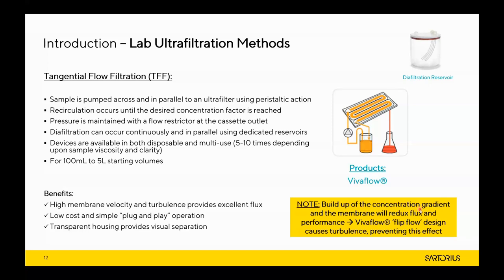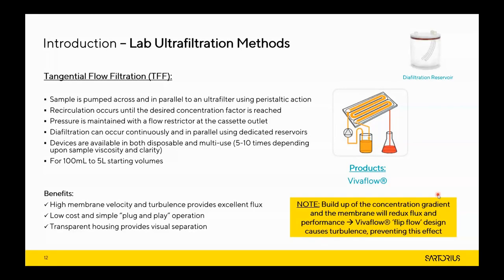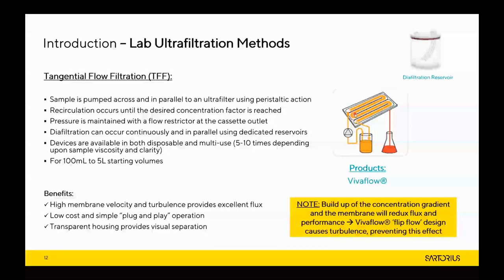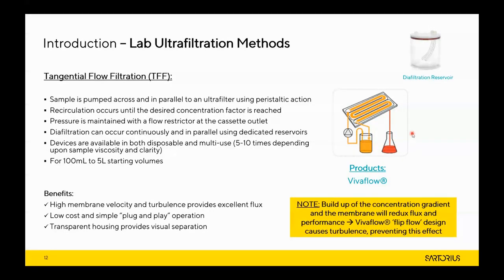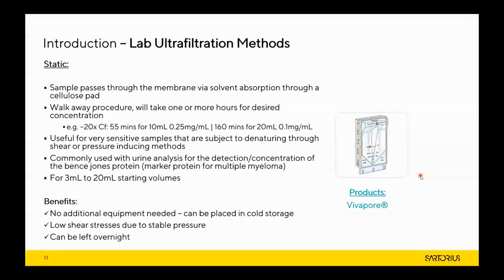With TFF, the concentration gradient at the membrane boundary layer increases membrane fouling, which reduces flux. One of the nice things about the VivaFlow design is the unique flip-flow style: each flip and flow causes turbulence that helps prevent that concentration gradient effect, causes agitation, and reduces membrane boundary layer buildup — making the device easier to use and more forgiving.